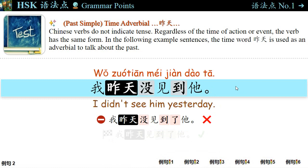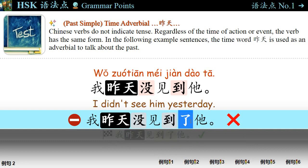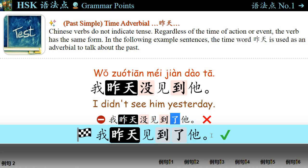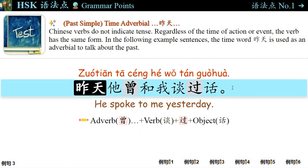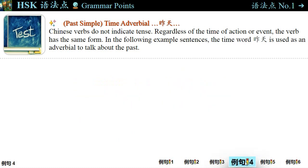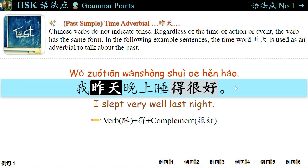例句二: 我昨天没见到他。 I didn't see him yesterday. You don't say 我昨天没见到了他。 The correct affirmative form is 我昨天见到了他。 I saw him yesterday. 例句三: 昨天他曾和我谈过话。 He spoke to me yesterday. The adverb 曾 plus verb 谈, the aspect particle 过, and the object. 例句四: 我昨天晚上睡得很好。 I slept very well last night. 很好 is the complement of the verb 睡。